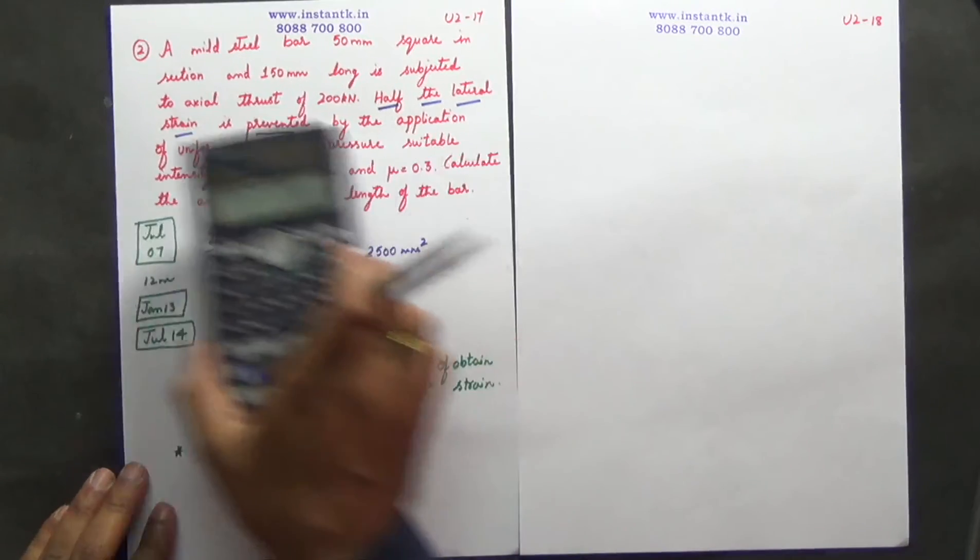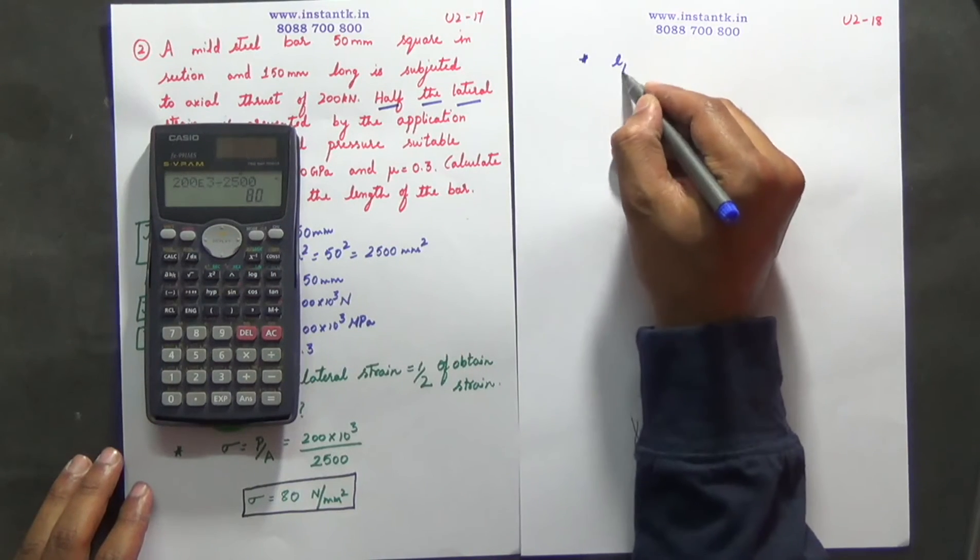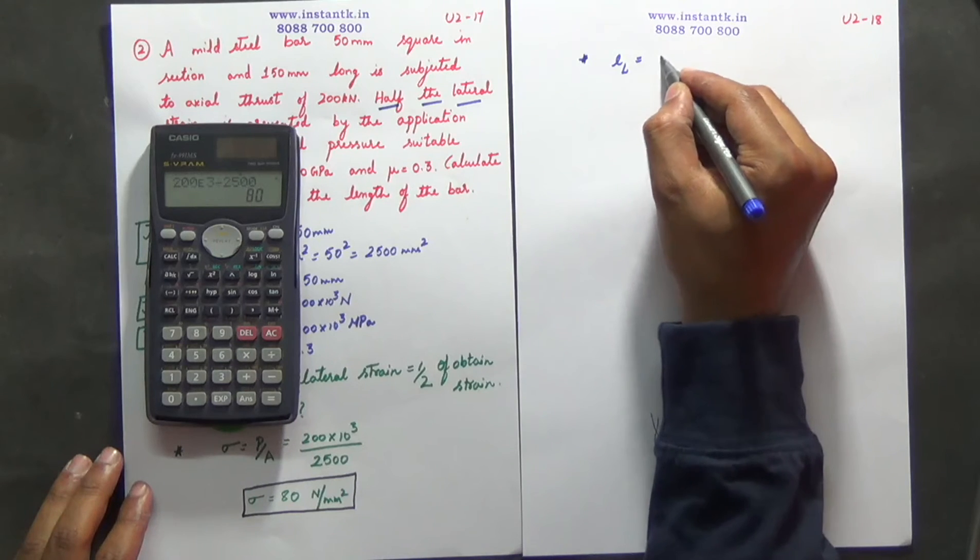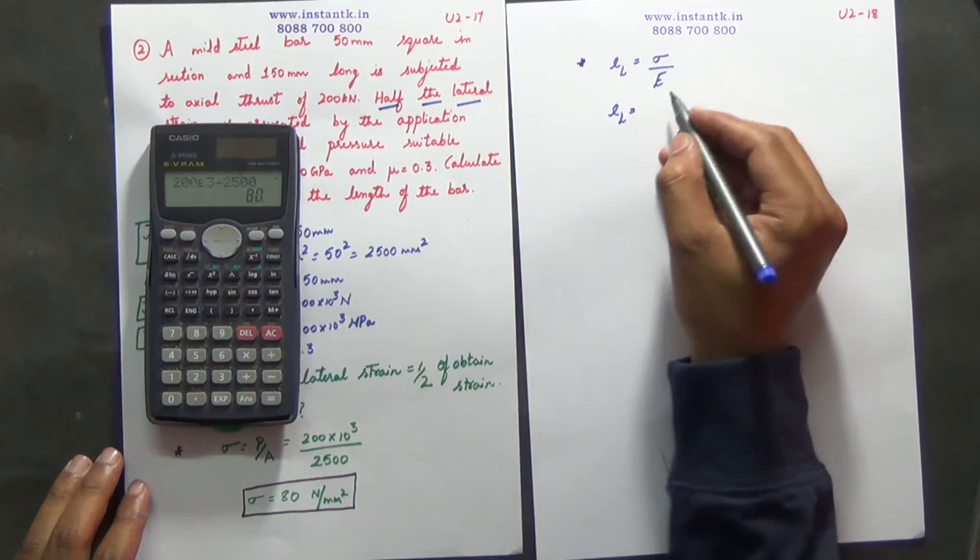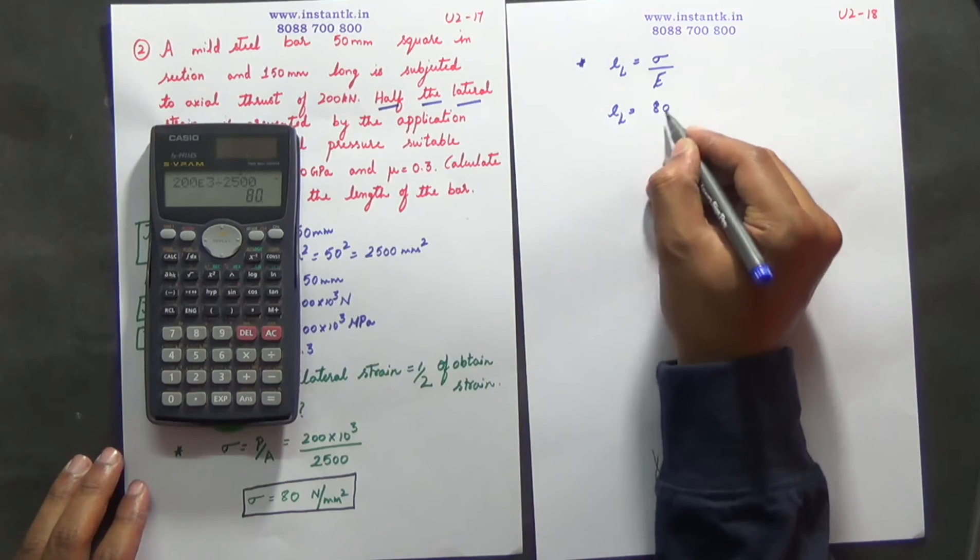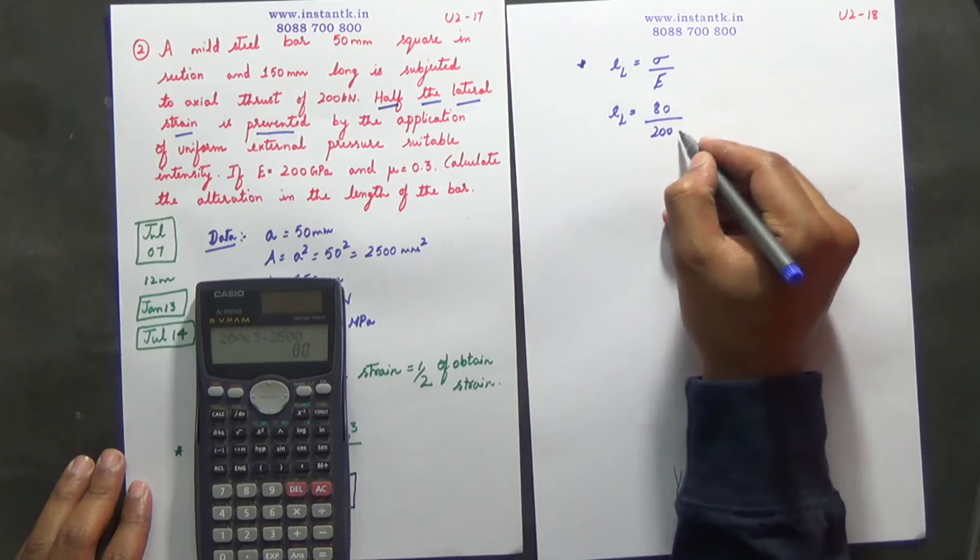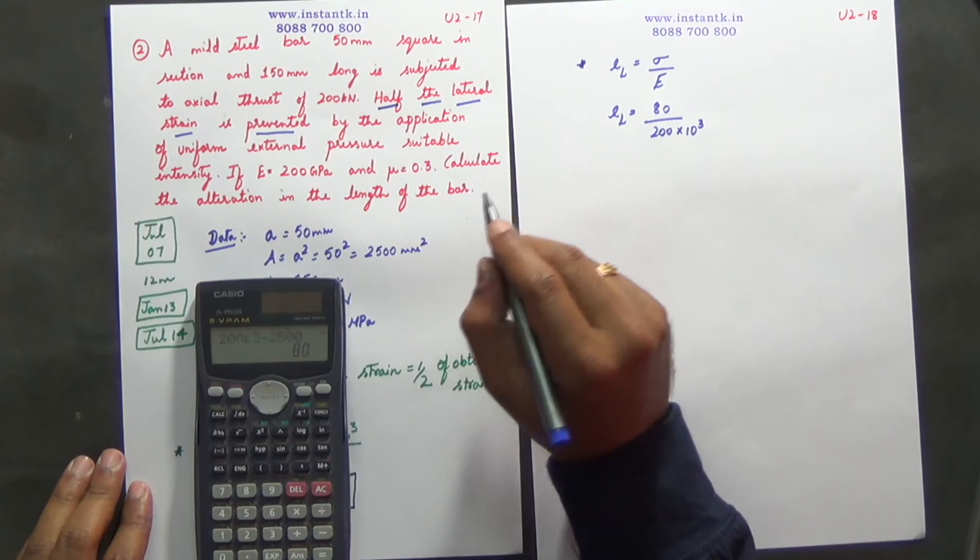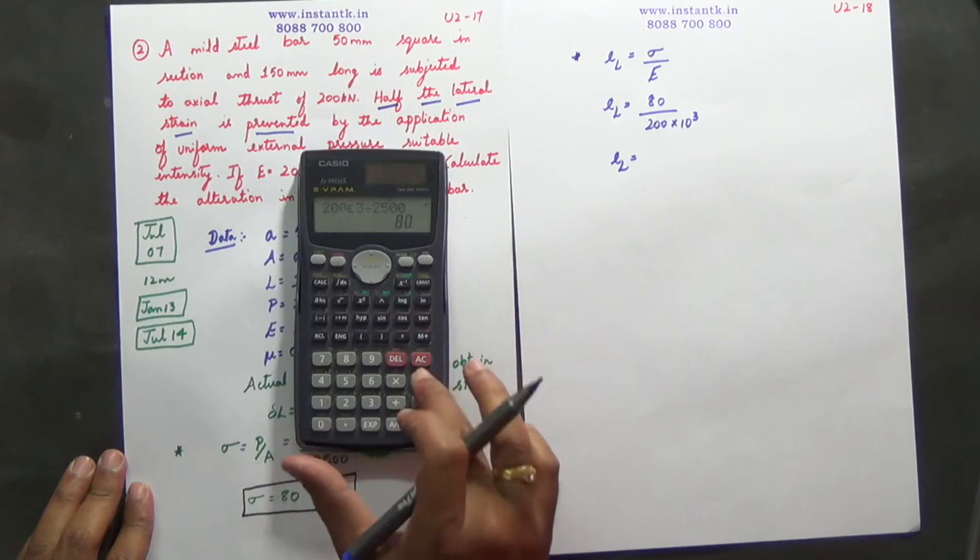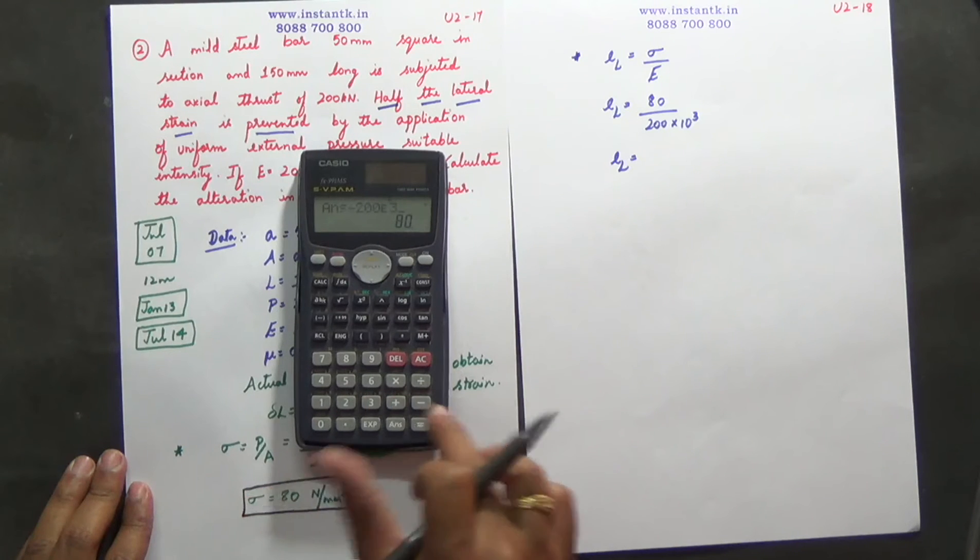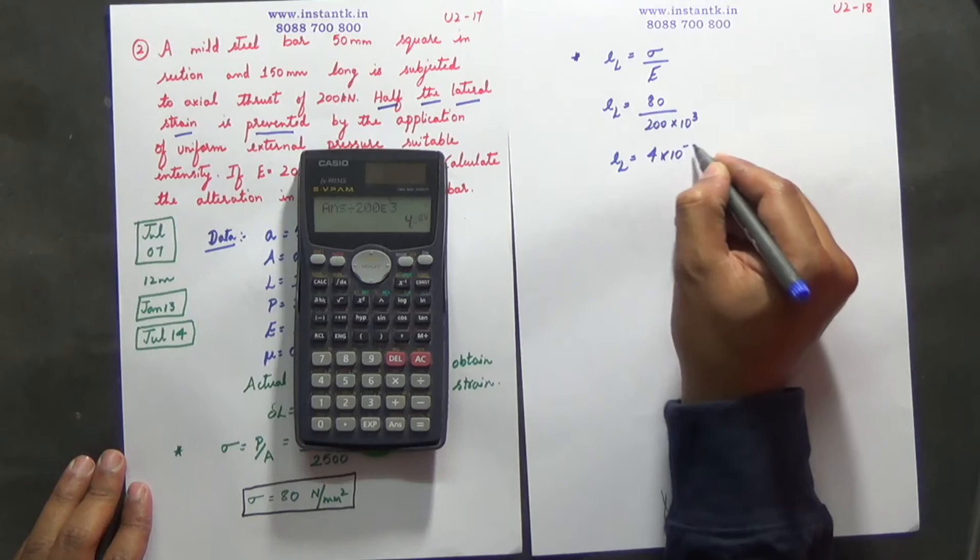Next, longitudinal strain is equal to sigma divided by E. So longitudinal strain is equal to 80 divided by 200 into 10 power of 3. So el is equal to 80 divided by 200 E 3, which is 4 into 10 power of minus 4.